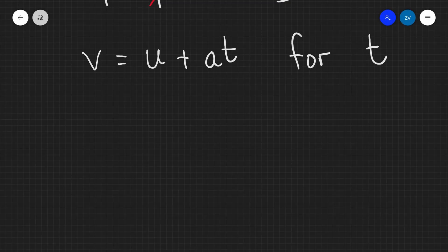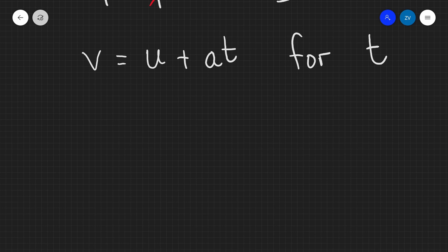In our second example, what we need to do is essentially cancel out the U on the right-hand side and then cancel out the A. So, let's start off by cancelling out the U first of all. Now, because this is equal to U plus AT, the only way we can remove this U is if we take away a U. So, this is going to equal to U plus AT minus U.